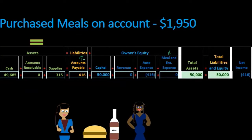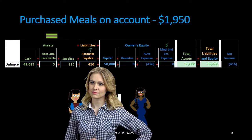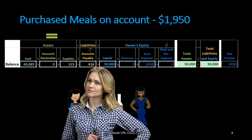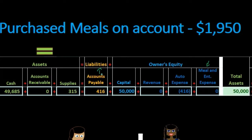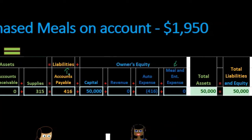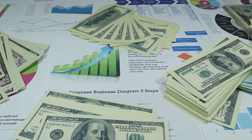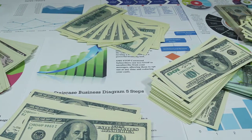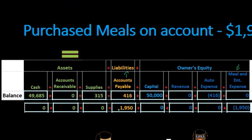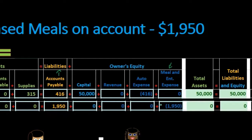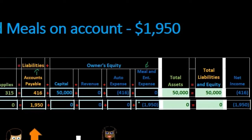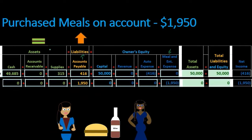We're increasing accounts payable rather than decreasing cash. We know accounts payable is increasing for at least two reasons: meals and entertainment is decreasing equity on the right side of the equal sign, so accounts payable — the other affected account — must go up to keep the equation in balance. We also know accounts payable increases because it represents money we owe, and we're buying something on account that we haven't yet paid for. Here is the transaction: accounts payable increases and meals and entertainment decreases total equity.